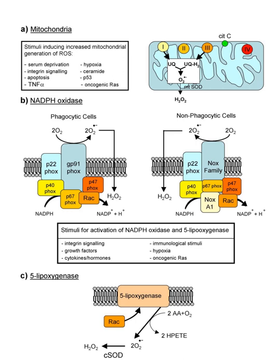In a biological context, ROS are formed as a natural byproduct of the normal metabolism of oxygen and have important roles in cell signaling and homeostasis. However, during times of environmental stress, e.g. UV or heat exposure, ROS levels can increase dramatically. This may result in significant damage to cell structures. Cumulatively, this is known as oxidative stress.